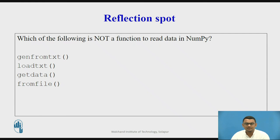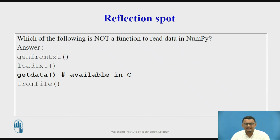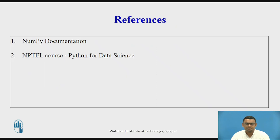Let us pause and answer a question: which of the following is not a function to read data in numpy? The answer is get_data. We have seen that genfromtxt, loadtxt, and fromfile are the routines in the numpy library to read data, whereas get_data is a function available in C. So get_data is not a numpy function for reading data. You may refer to the official numpy documentation and the NPTEL course Python for Data Science for further details.